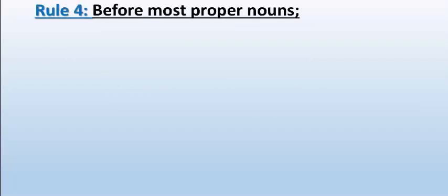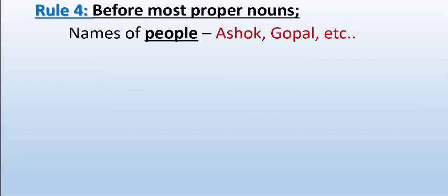Rule number four: before most proper nouns. This is a very important rule, so please watch and learn carefully. First, names of people — Ashok, Gopal, Hari, Ram — these are all proper nouns, and we do not use article before them.